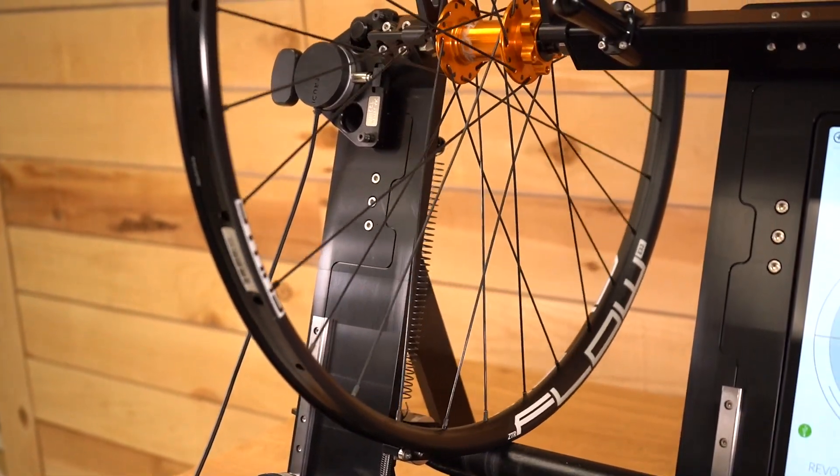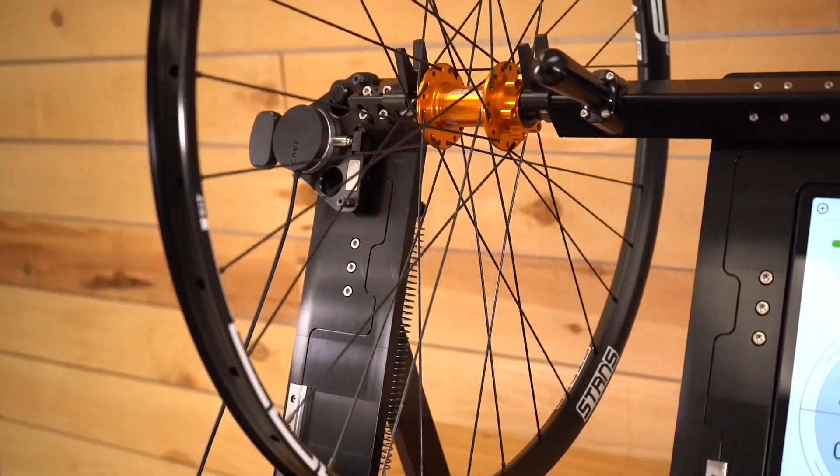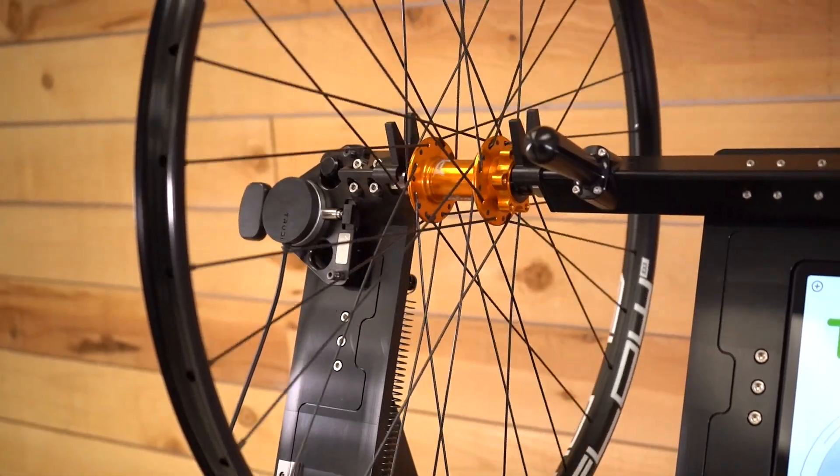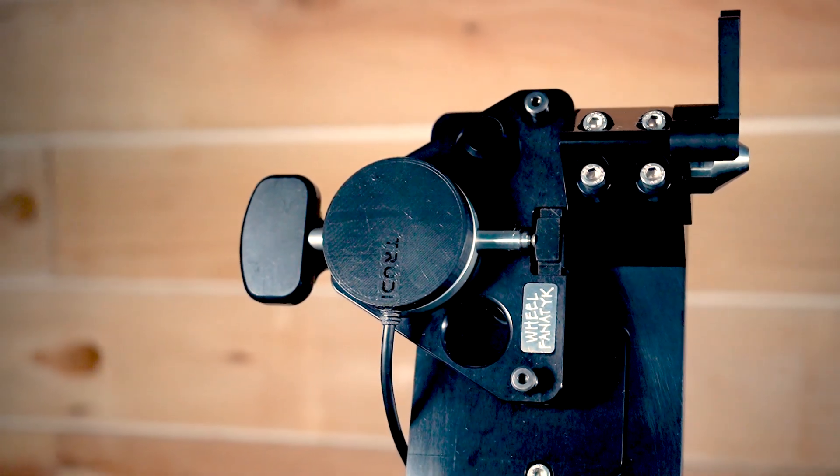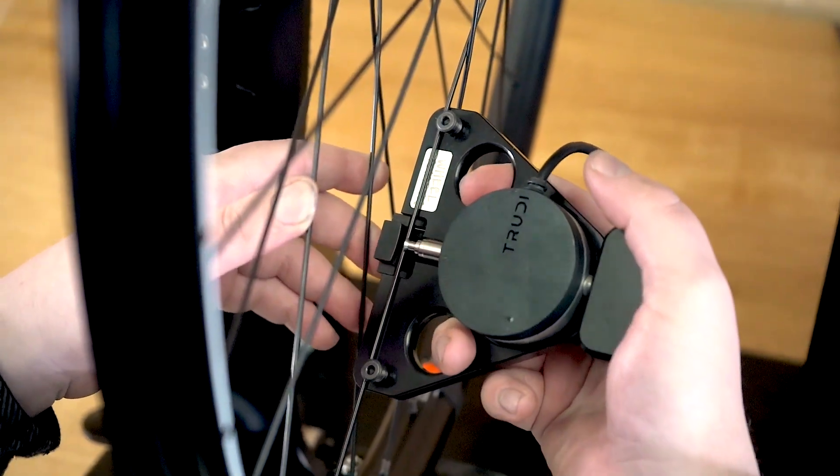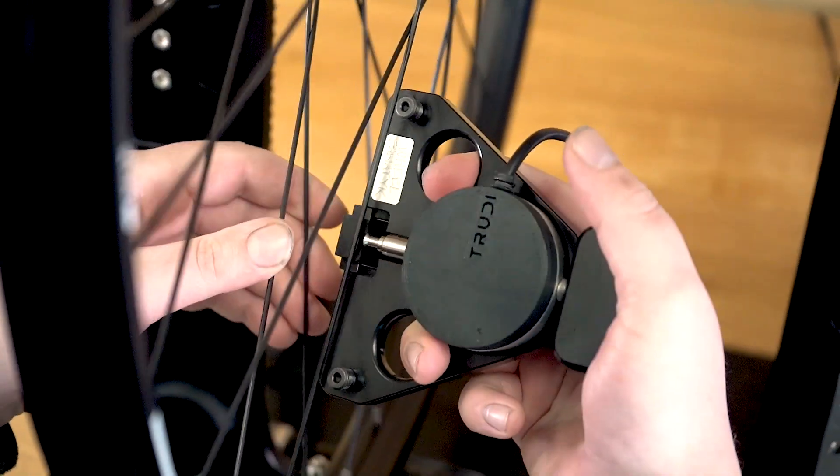While Trudy can operate without tension data, adding it ensures the best possible wheel build. For this, we use a specially designed digital tensiometer which is incredibly fast and requires no foot pedal.